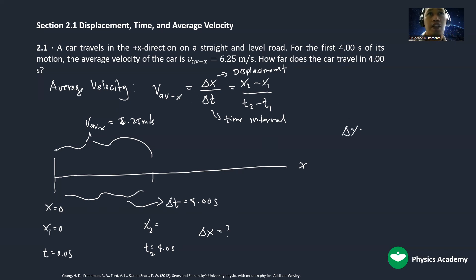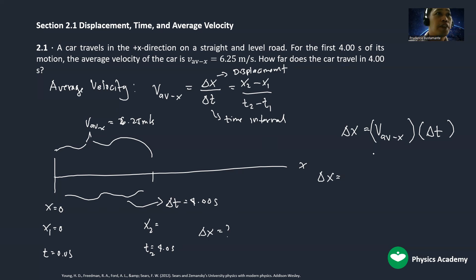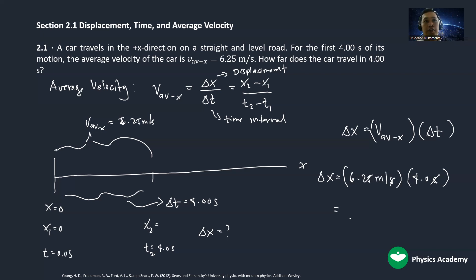The displacement is given by the average velocity multiplied by the time interval. So the displacement equals 6.25 meters per second multiplied by 4.0 seconds. The units cancel, and 6.25 times 4 gives us 25 meters. The final answer is 25 meters.